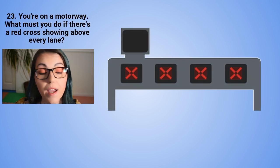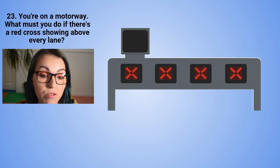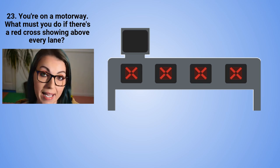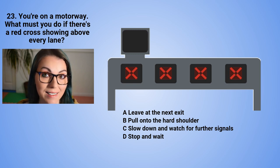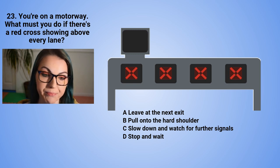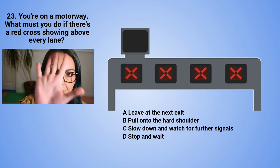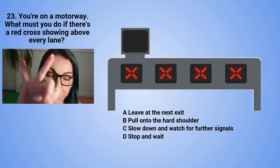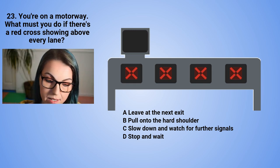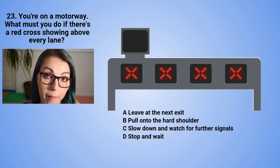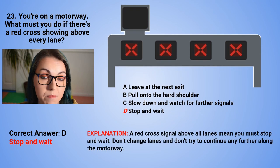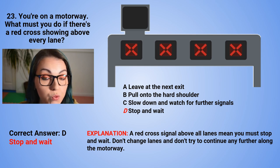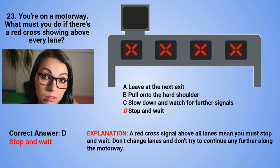Question 23: You are on a motorway. What must you do if there is a red cross showing above every lane? A. Leave at the next exit. B. Pull onto the hard shoulder. C. Slow down and watch for further signals. Or D. Stop and wait. The correct answer is D — stop and wait. A red cross signal above all lanes means that you must stop and wait. Don't change lanes and don't try to continue any further along the motorway.